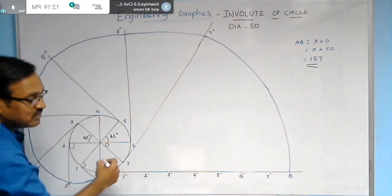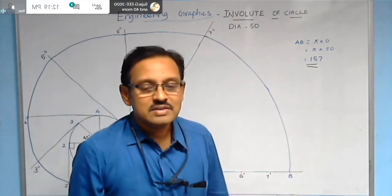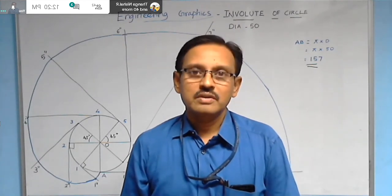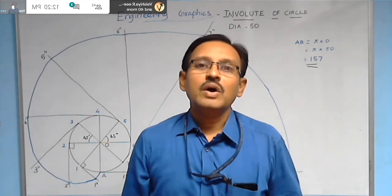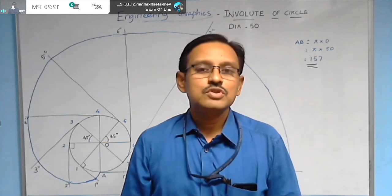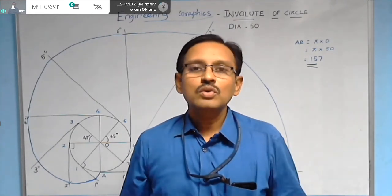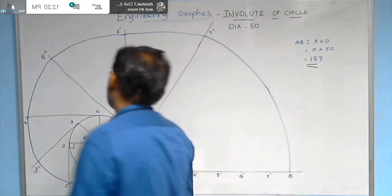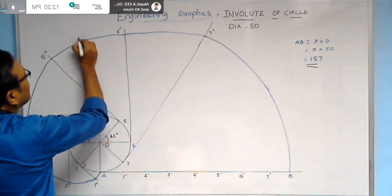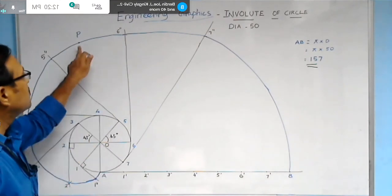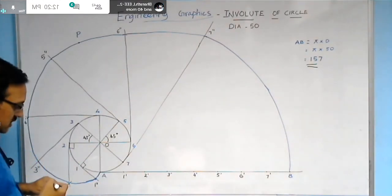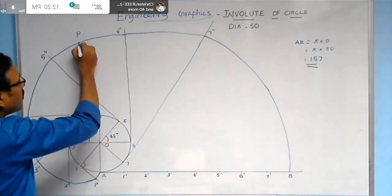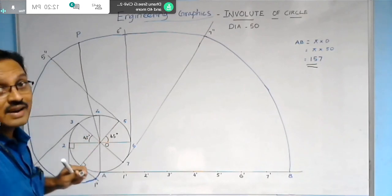A similar procedure can be followed for constructing the involute of a square, pentagon, triangle, or any polygon — which will be discussed in the next lecture. Now, for constructing the tangent and normal to the involute: take a point P on the curve and join P to the center O of the circle with a thin line.